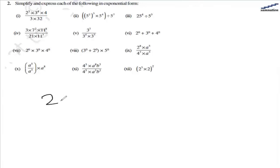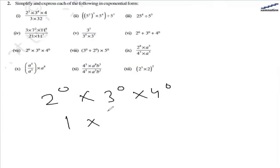In the seventh part, we have 2 raised to the power of 0. Again, 2 raised to the power of 0 is 1, so the answer is 1.